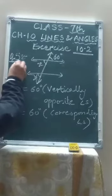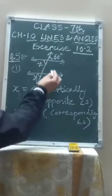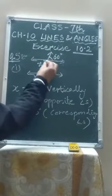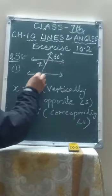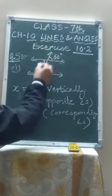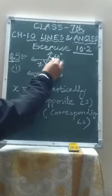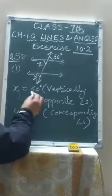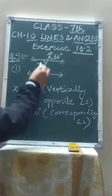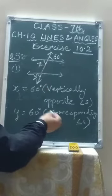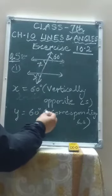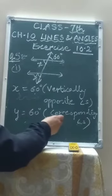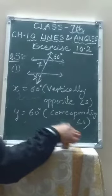Question number 5, first part. These two are parallel lines and the transversal is cutting them. This angle is 60 degrees and you have to find x and y. Since x and 60 degrees are vertically opposite angles, x equals 60 degrees because vertically opposite angles are equal. And x and y are corresponding angles, so they are also equal to each other. That means y is also 60 degrees — the reason is corresponding angles.